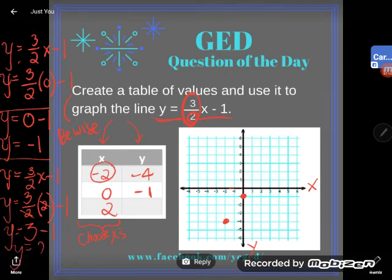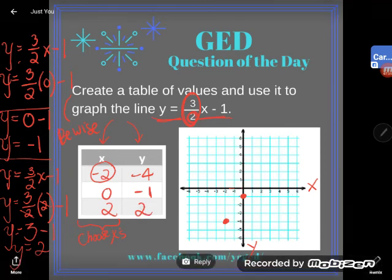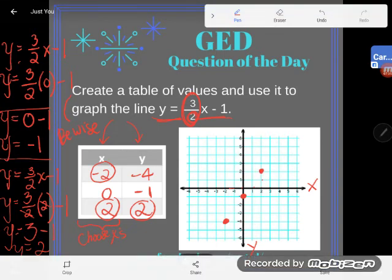And close parentheses and press enter, and you do get three minus one, and my y is equal to two. Okay, and so now I got a third point on my graph: the point two, two. X value two, y value two. And so I'll go two in the x direction, which is horizontal, and two in the y direction, which is vertical, and I get to that point.